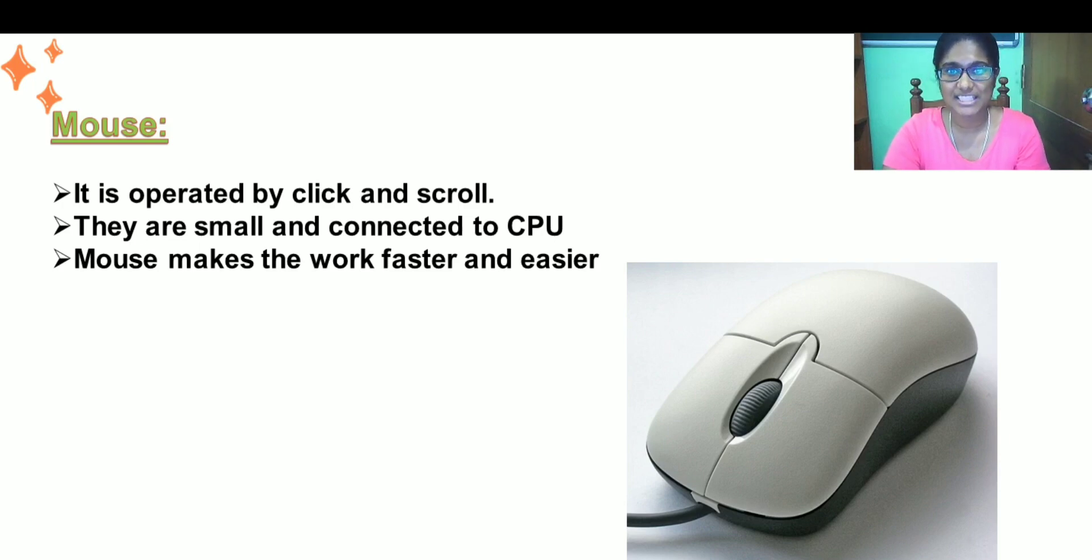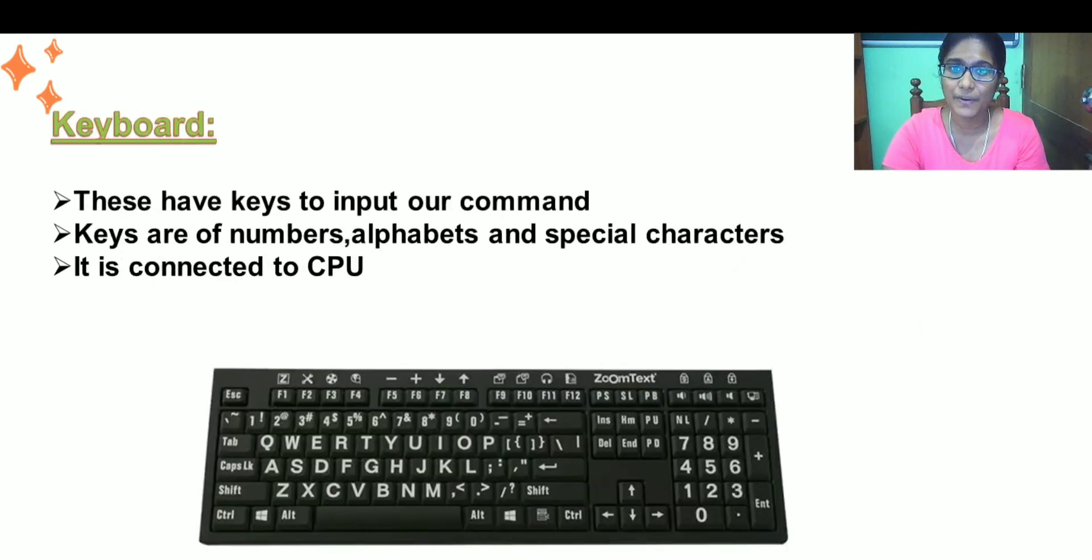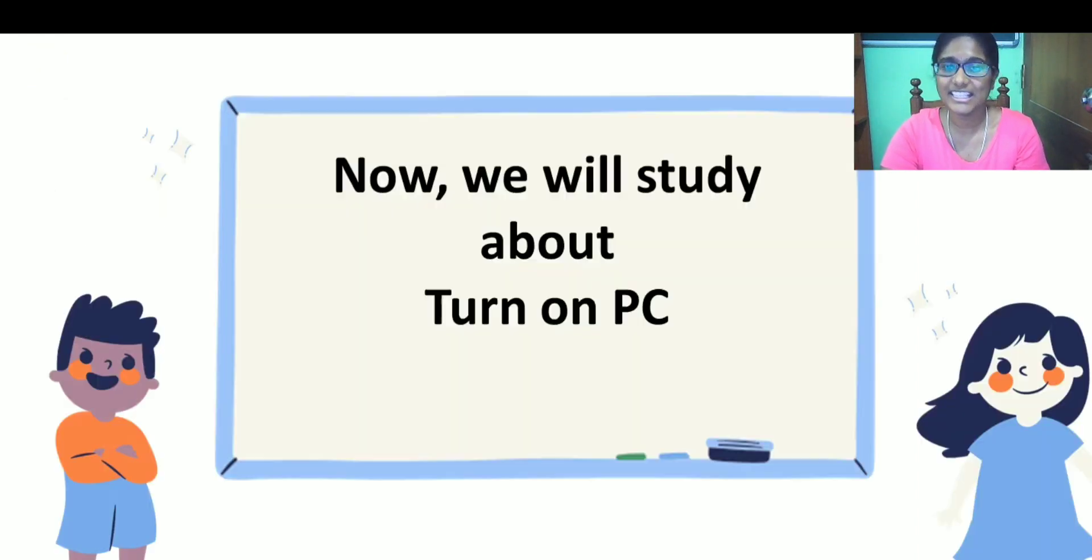Mouse is a small device that is connected to the CPU. CPU is the main unit of a computer. It is called the brain. Keyboard is used for entering our input. It has many keys.